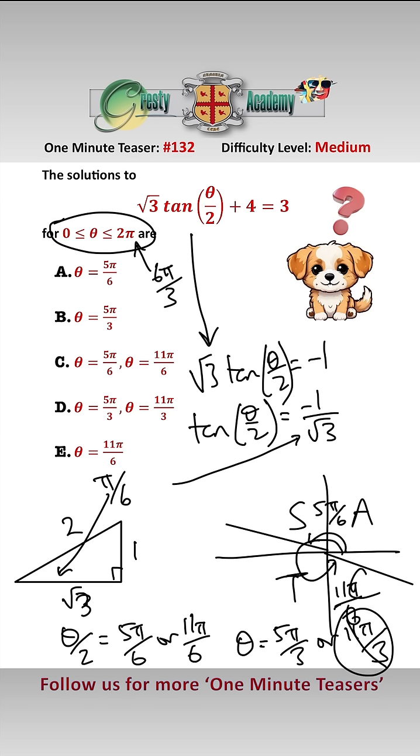leaving us only with this one inside the range. So therefore, theta is 5 pi over 3, answer B.